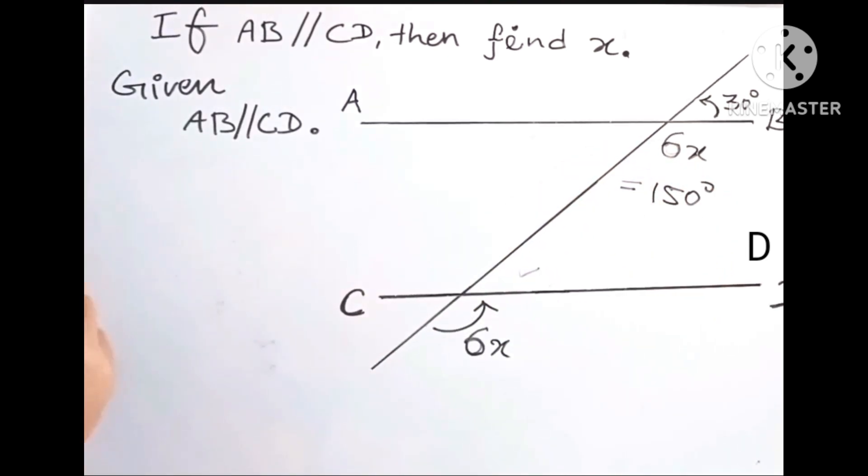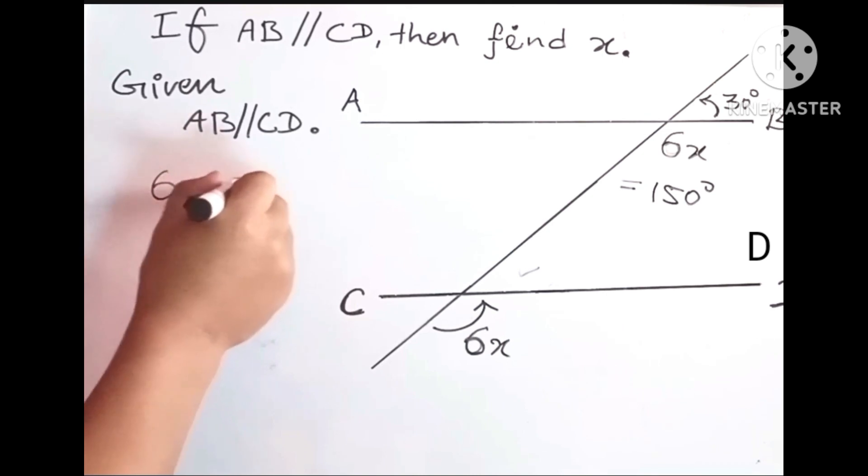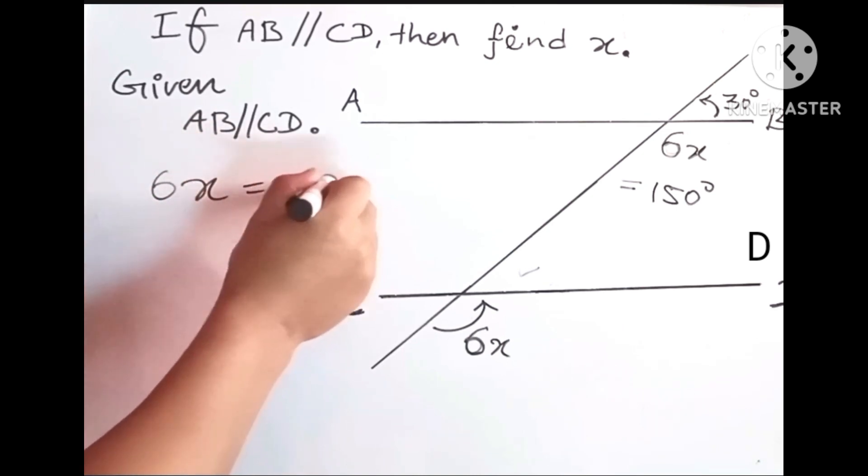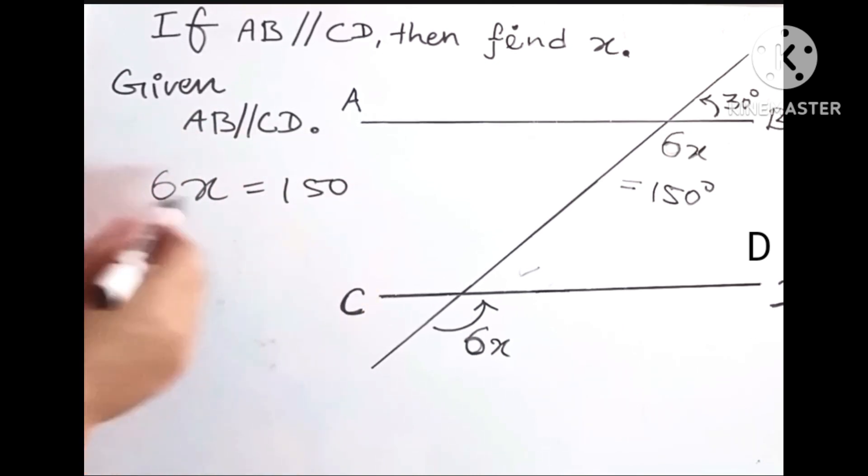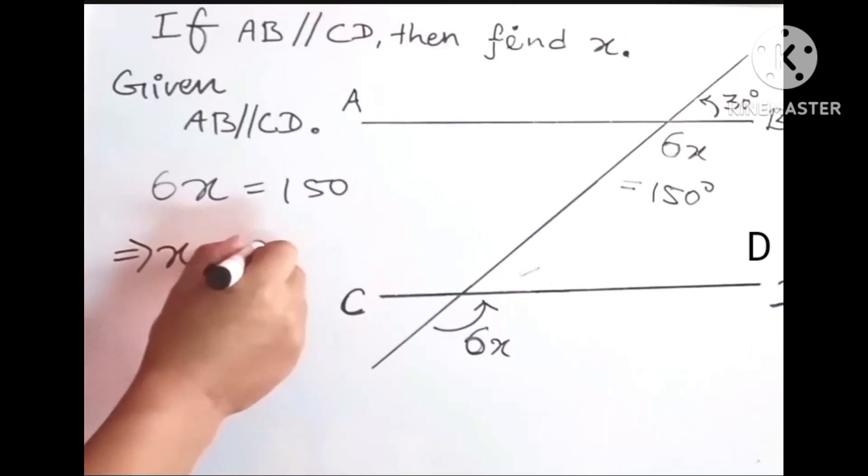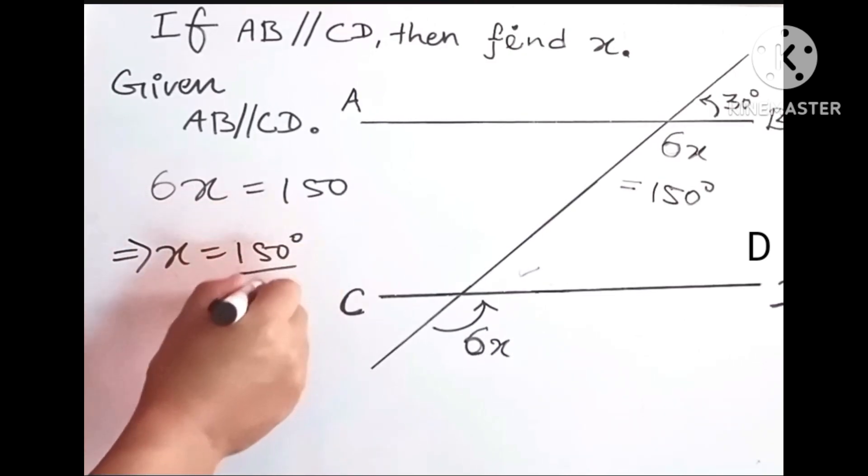So now we have to solve this equation: 6x equals 150 degrees. If we solve this equation, we can find the value of x. Therefore, x equals 150 divided by 6.